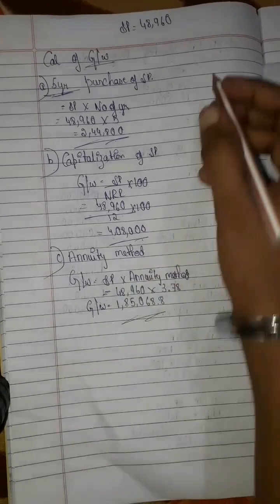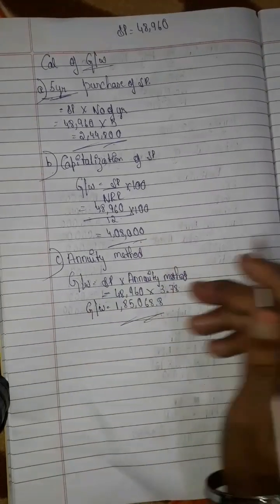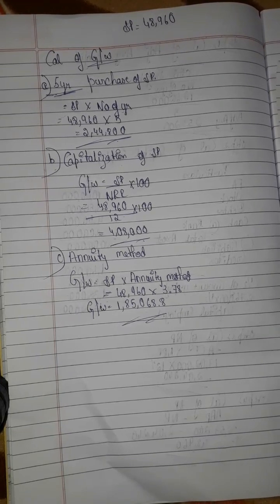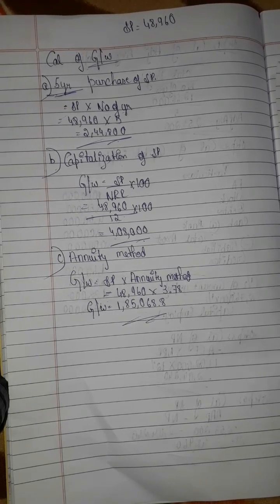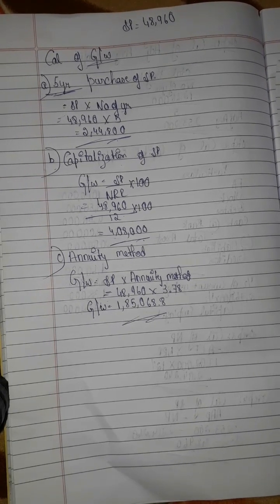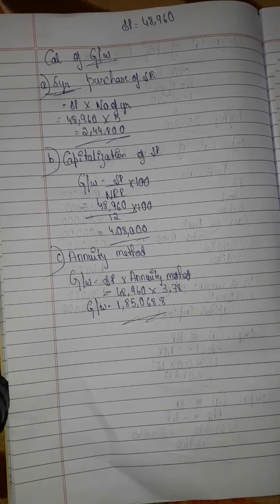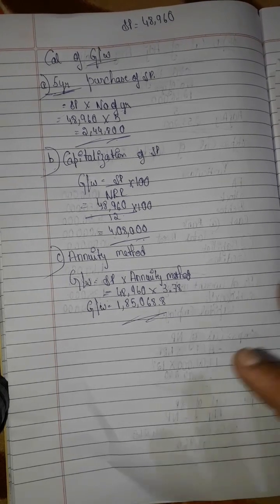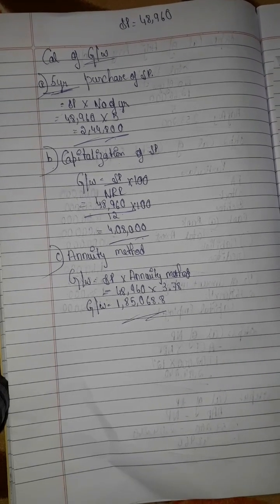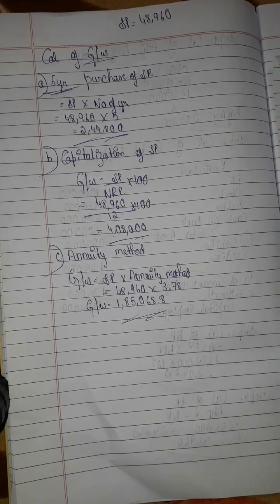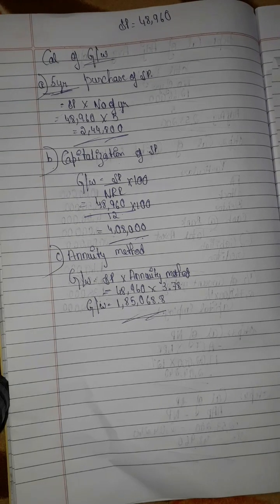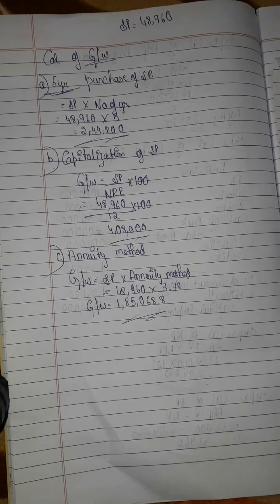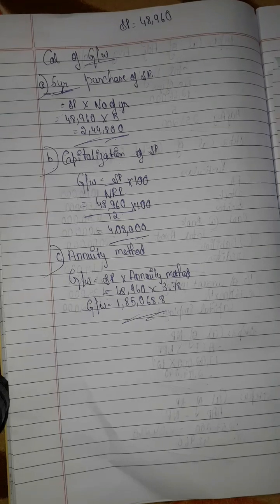This is the calculation of goodwill by the super profit method — usually a 12-mark question. In the next video I will explain Chapter 3. Chapter 2 related sums — 12 marks and 4 marks — are now complete. Thank you for watching.